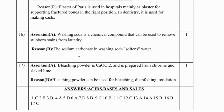Question number 17: bleaching powder is calcium oxychloride and is prepared from chlorine and slaked lime. The reason says bleaching powder can be used for bleaching, disinfecting and oxidation. The assertion is true but the reason is false, so C is the answer. This concludes the acid, base and salt assertion and reason questions. Do subscribe to the channel.